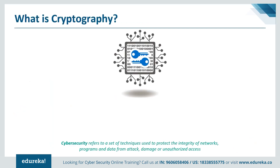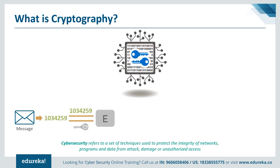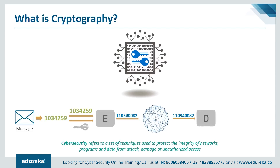Cryptography is the practice and study of techniques for securing communication and data in the presence of adversaries. First, a message is converted into a numeric form, then an encryption key is applied in an encryption algorithm to produce what we call ciphertext. This ciphertext is sent over the network, and the receiver uses a decryption key in a decryption algorithm to recover the original message — or gets an error if something went wrong.